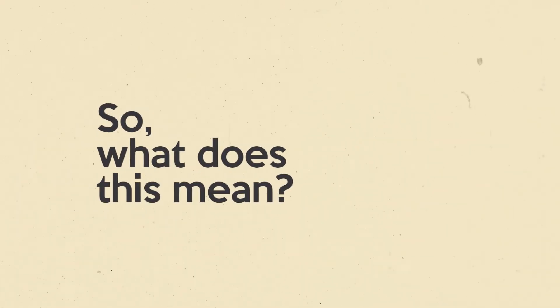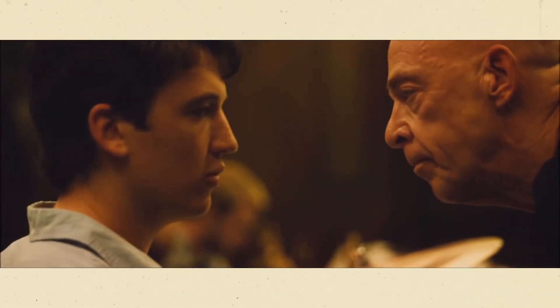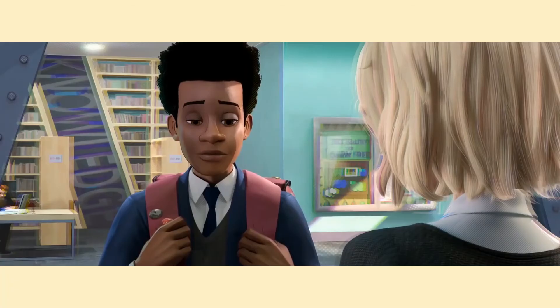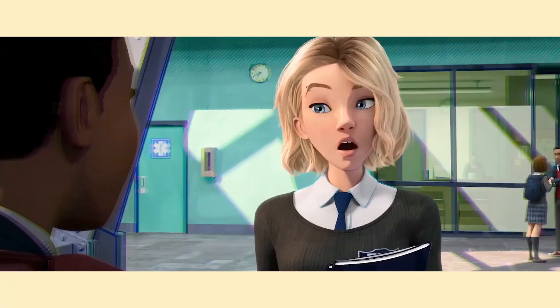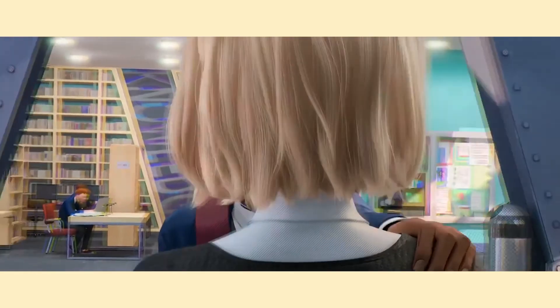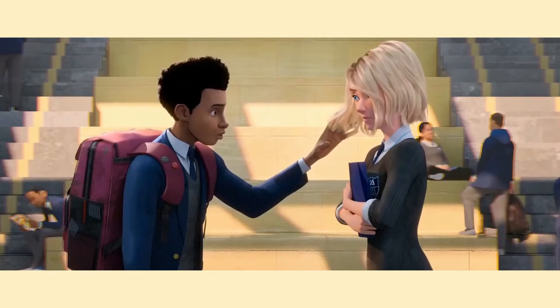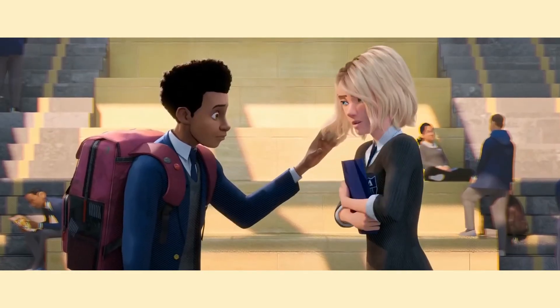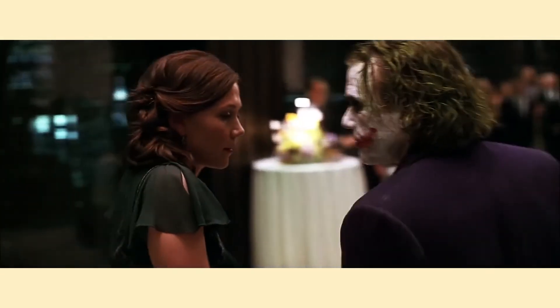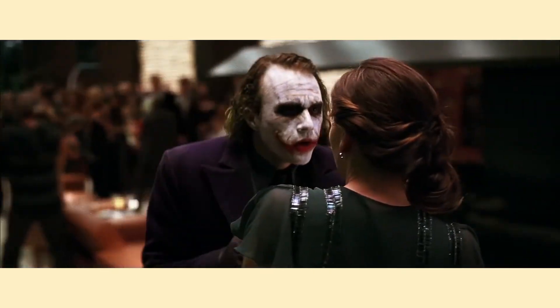So what does this mean? It means the 180 rule can be broken as long as it's used as a device to further the story. Unbroken, it's a rule for visual grammar. Broken, it can be used as a technique. You just need to remember why it's a rule and have a strong reason why to break it.